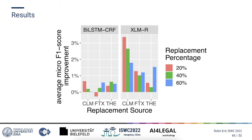In this plot you can nicely see what I just talked about. It shows the average micro F1 score improvements across all datasets, achieved by applying synonym replacement with different replacement sources, replacement percentages, and the two models. The contextual language model, abbreviated as CLM on the plot, as replacement source works best when combined with a low replacement percentage, which is the red bar. And the XLMR model benefits more from applying data augmentation techniques than the BiLSTM-CRF model — as you can see, the bars are higher on that side of the plot.